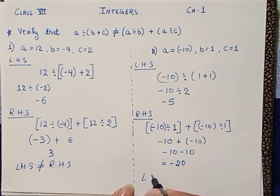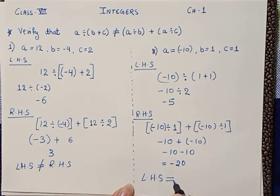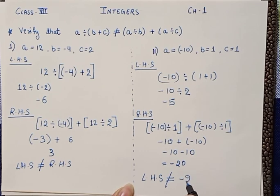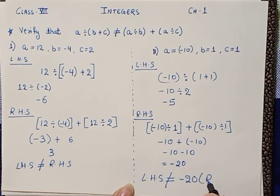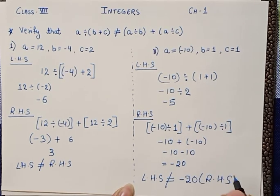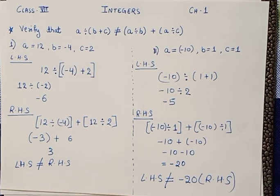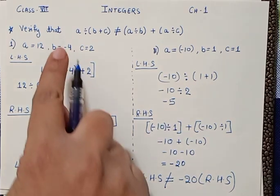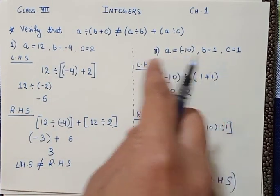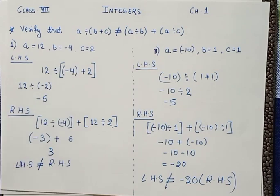From here we can again see that LHS minus 5 is not equal to minus 20, which is our RHS. So it is proved by having two different values of a, b, c in two different questions. We can verify this given equation.